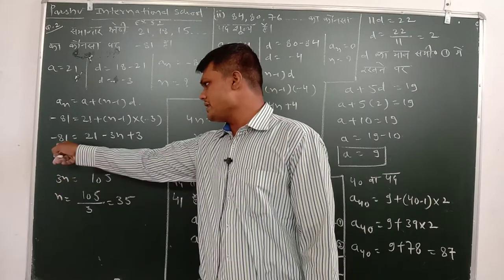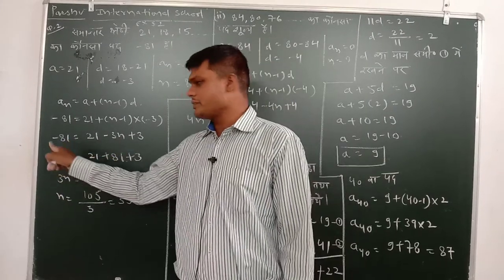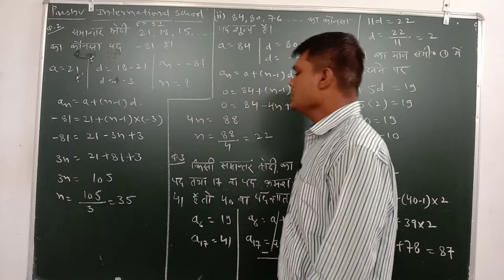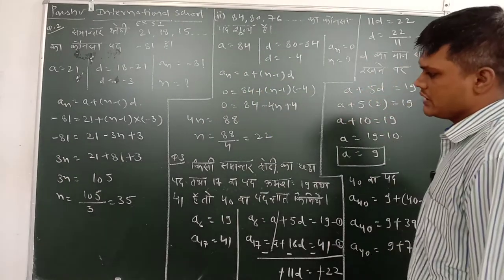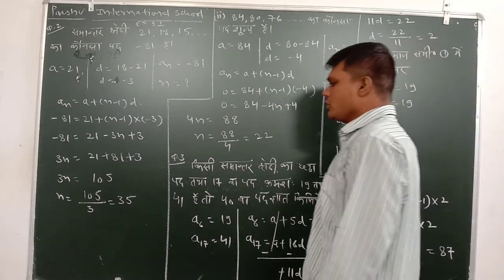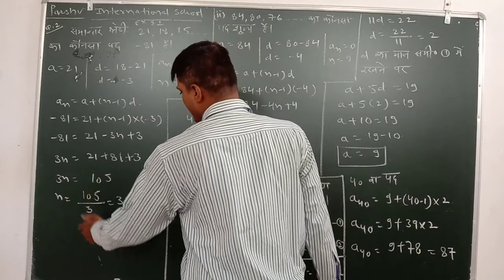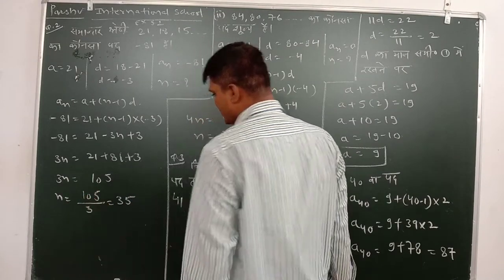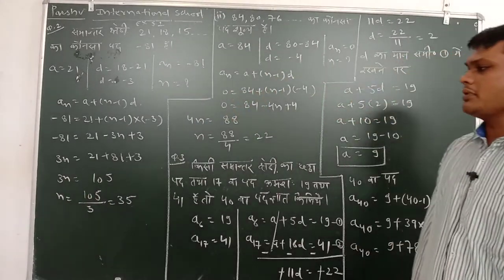3n is equal to minus ka idhar aa gaya. And this is what we call 3n barabar 21 plus 81 plus 3. So 3n barabar kitna hoga ye? 105. So n kaman kitna hoga ye? 105 bata 3. This is what we call n barabar 35.